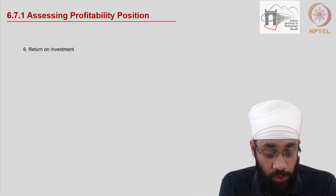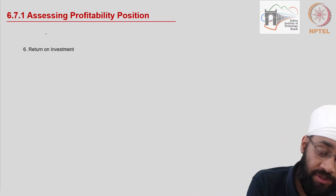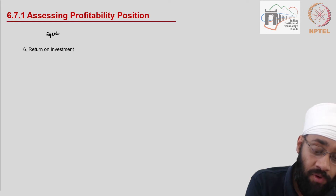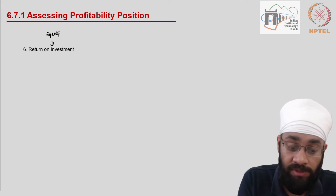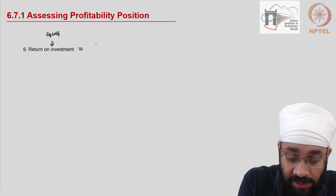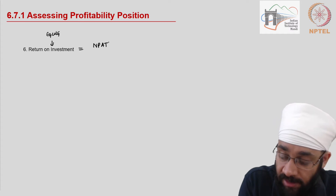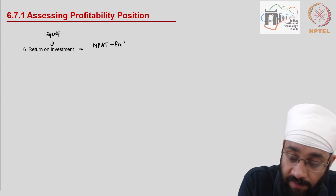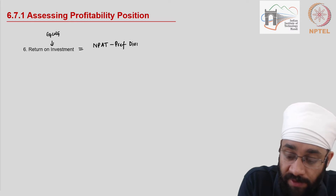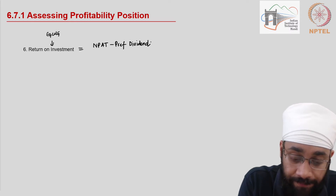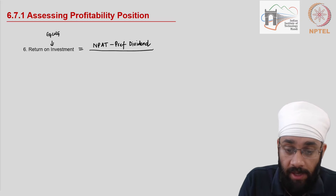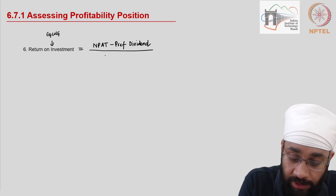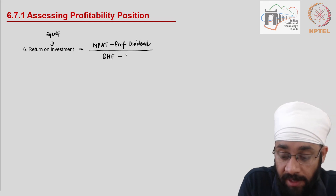The next ratio is Return on Investment (ROI), calculated from the point of view of equity shareholders. It is calculated as net profit after taxes minus the dividend paid to preference shareholders, divided by shareholder funds minus the preference share capital — that is, the equity shareholders' funds only.